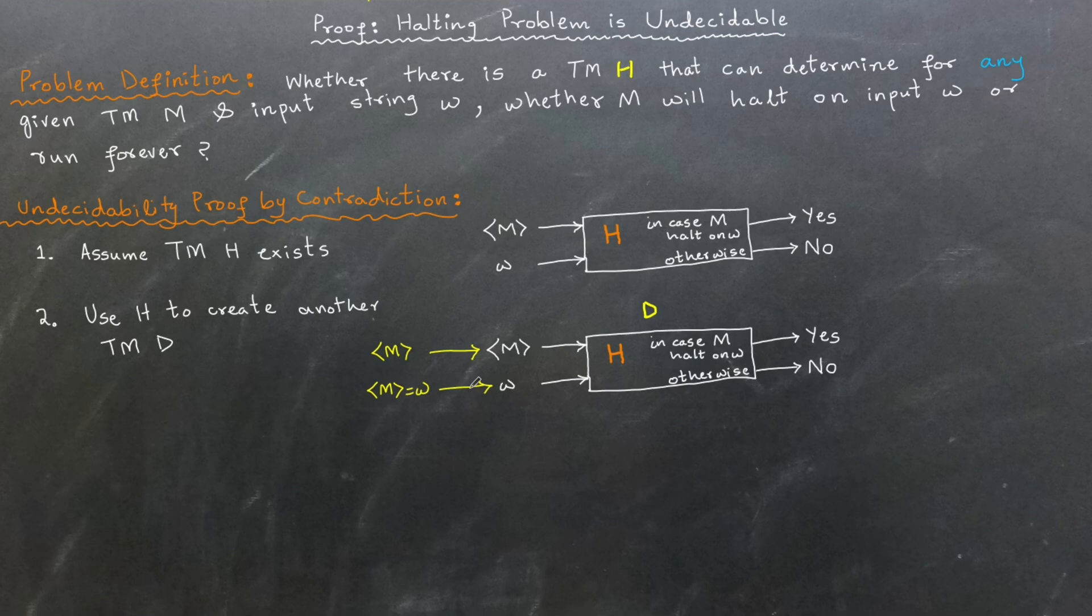Here is the twist. First, if H determines that M halts on the input, D enters an infinite loop. Conversely, if H determines that M loops forever, D immediately halts.